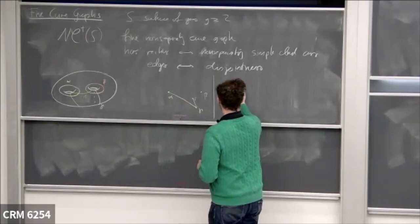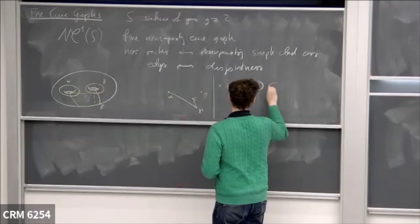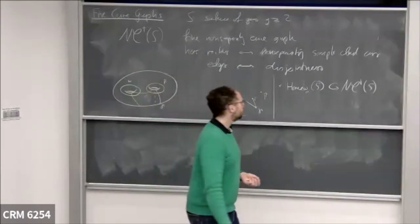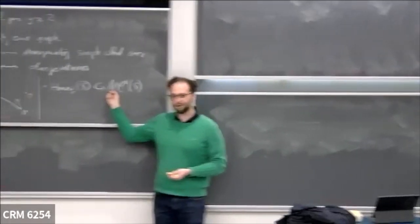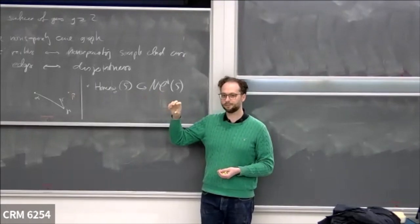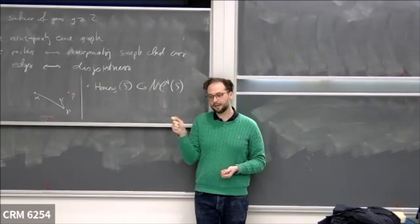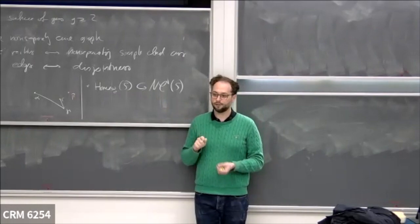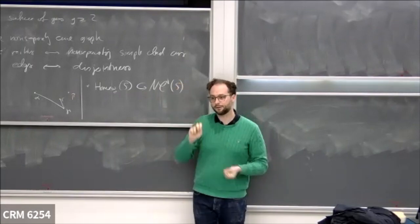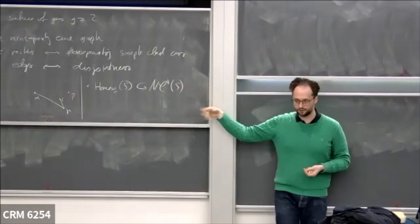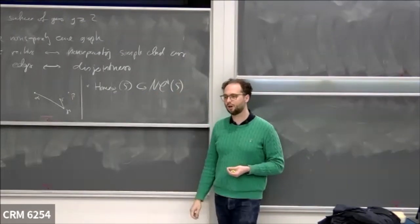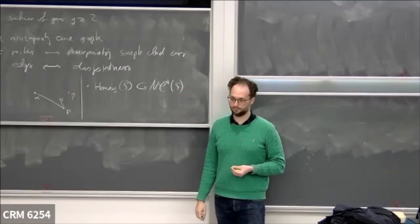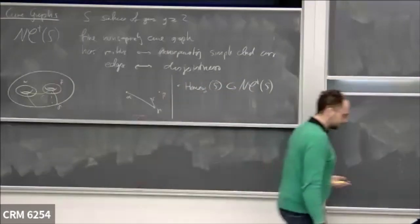Homeo and homeo-zero do actually act on this fine non-separating curve graph. But not with the graph topology. If you imagine something close to the identity, it will send curves most likely to things that intersect them, and so it'll spontaneously move points two away. So for the topology or CW structure coming from the graph structure, this is a terrible action. But you'll see later that for the coarse geometry there is a nice connection.